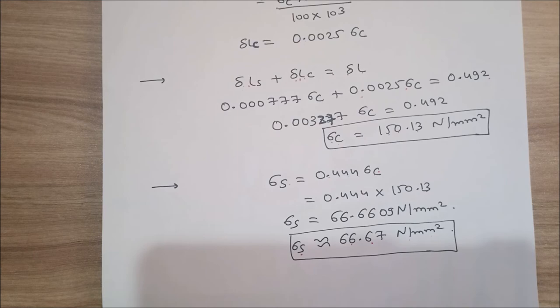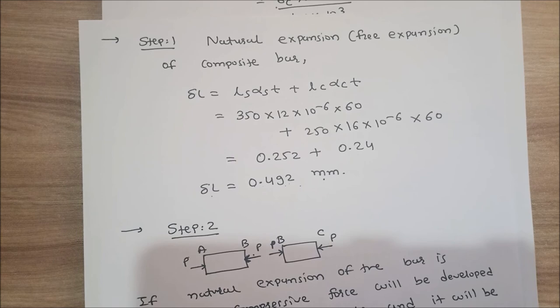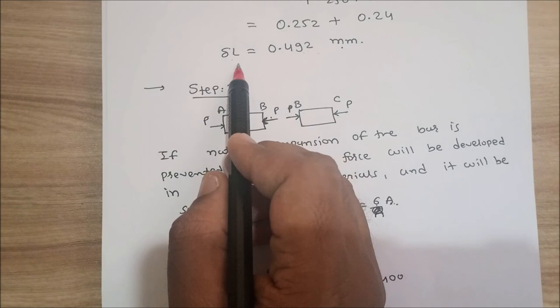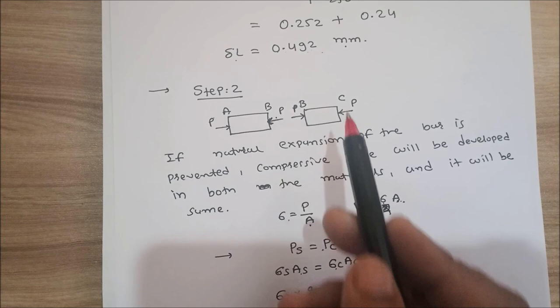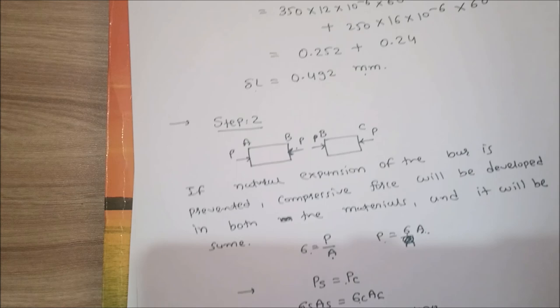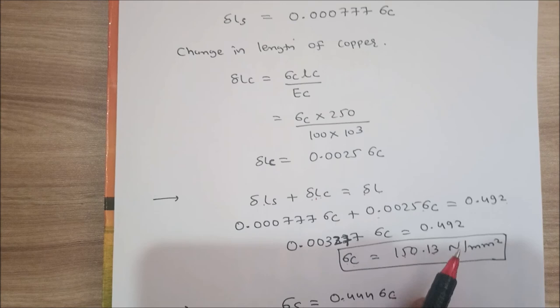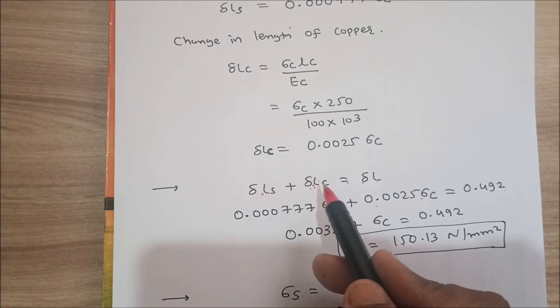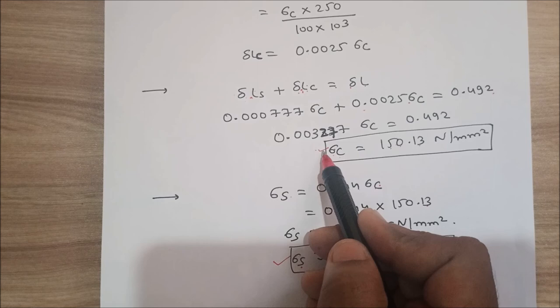In this way we solve the numerical step by step. Step 1: find free expansion using delta L = L_s·alpha_s·T + L_c·alpha_c·T. Step 2: if natural expansion is prevented, compressive force develops equally in both materials, giving sigma_s·A_s = sigma_c·A_c to relate sigma_s and sigma_c. Step 3: find changes in length of both bars and set delta L_s + delta L_c = delta L to find stresses in copper and steel. Thank you.